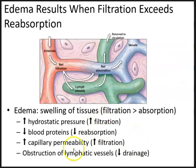Another cause of edema is obstruction of lymphatic vessels, which decreases drainage. Inadequate lymph drainage occurs when there is an obstruction in the lymphatic system, particularly at the lymph nodes, due to parasites, cancer, or fibrotic tissue growth caused by therapeutic radiation, which can block movement of lymph through the lymphatic system. A parasitic condition can cause elephantiasis — a chronic condition where there is gross enlargement of the legs and lower appendages when parasites block the lymph vessels. Lymph drainage can also be impaired if lymph nodes are removed during surgery, which is a common procedure in the diagnosis and treatment of cancer.